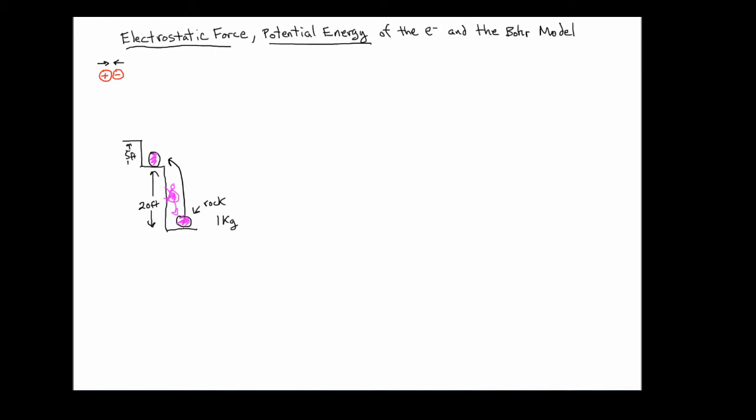In essence, this rock only has the choice of three places in my diagram: it can be located at ground level, on the first ledge, or on the second ledge. It cannot be between the ledges, because if the rock tries to settle on the side of the cliff, it's just going to fall back down. If we start on the ledge partway up at 20 feet and try to stop partway between, it will fall back down to that ledge.